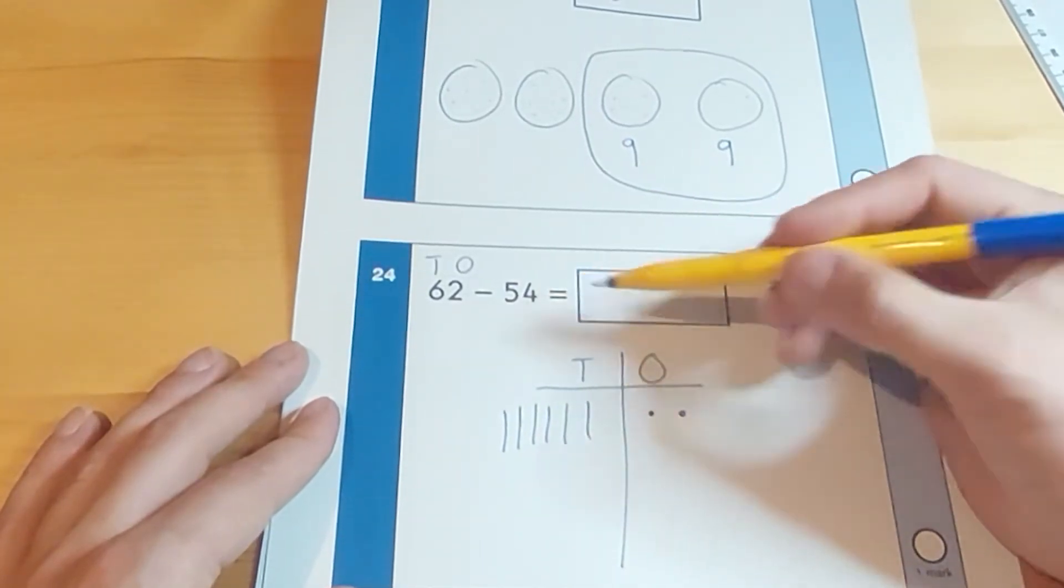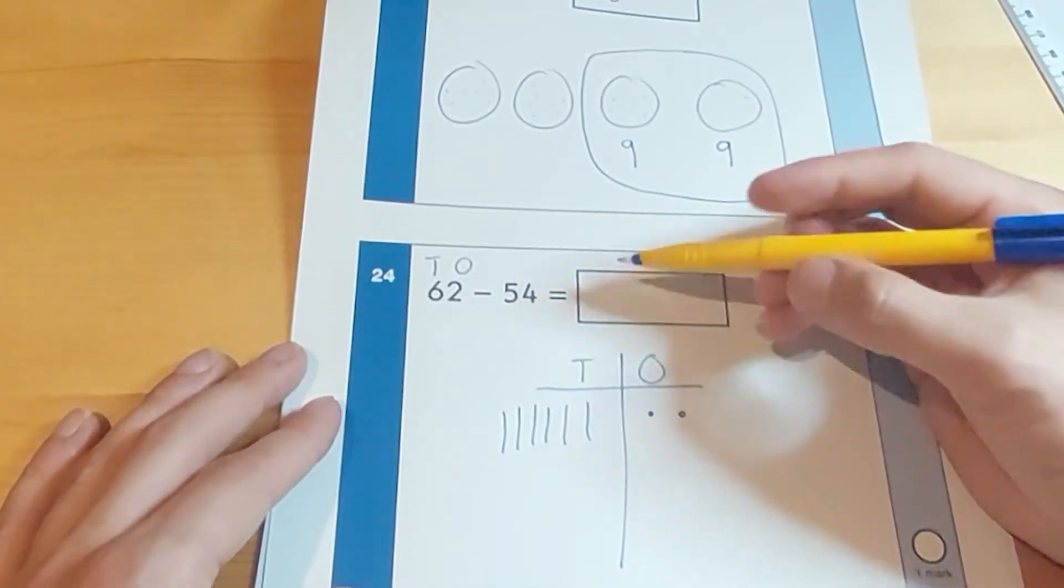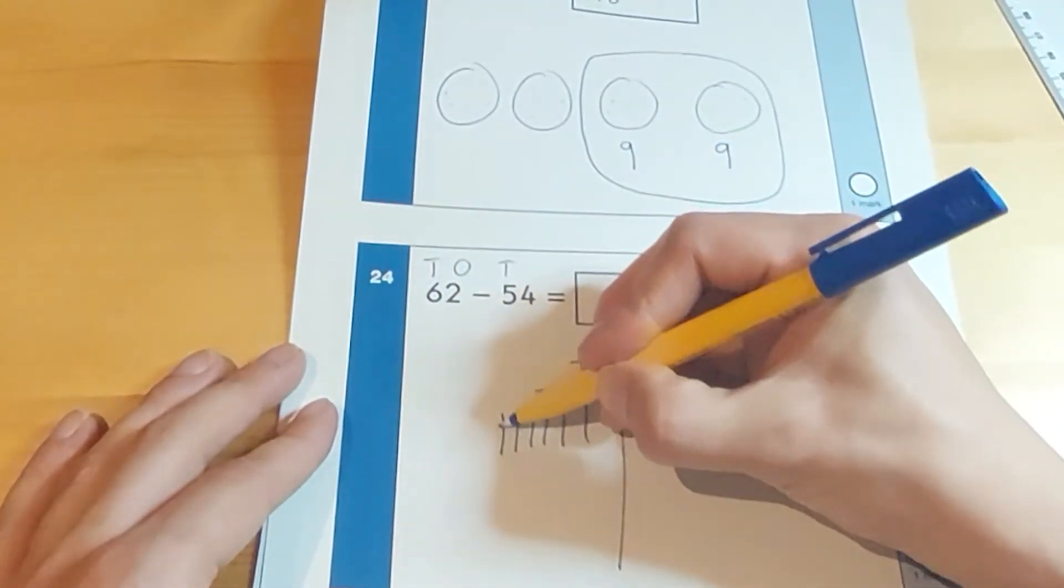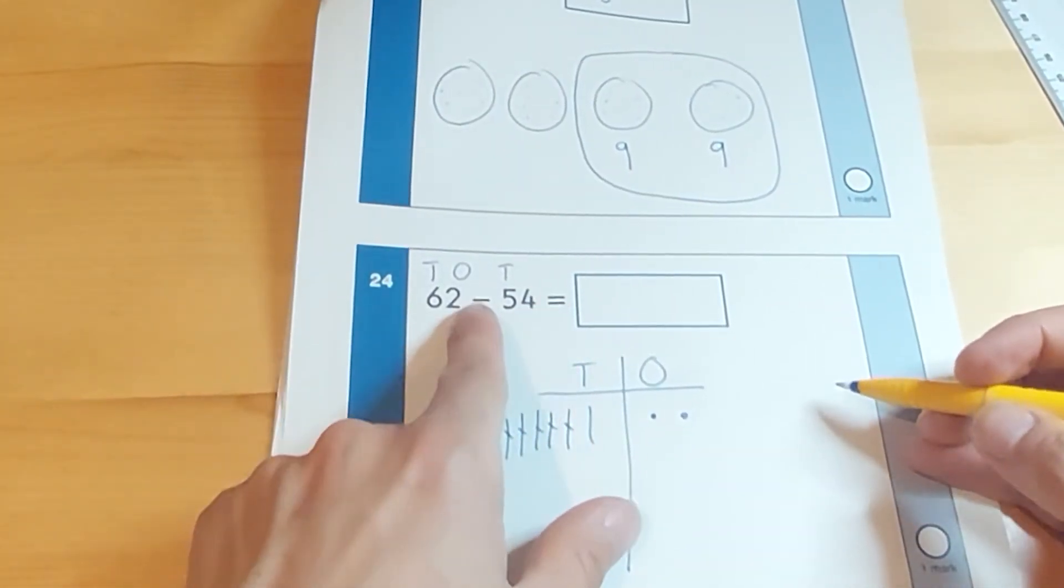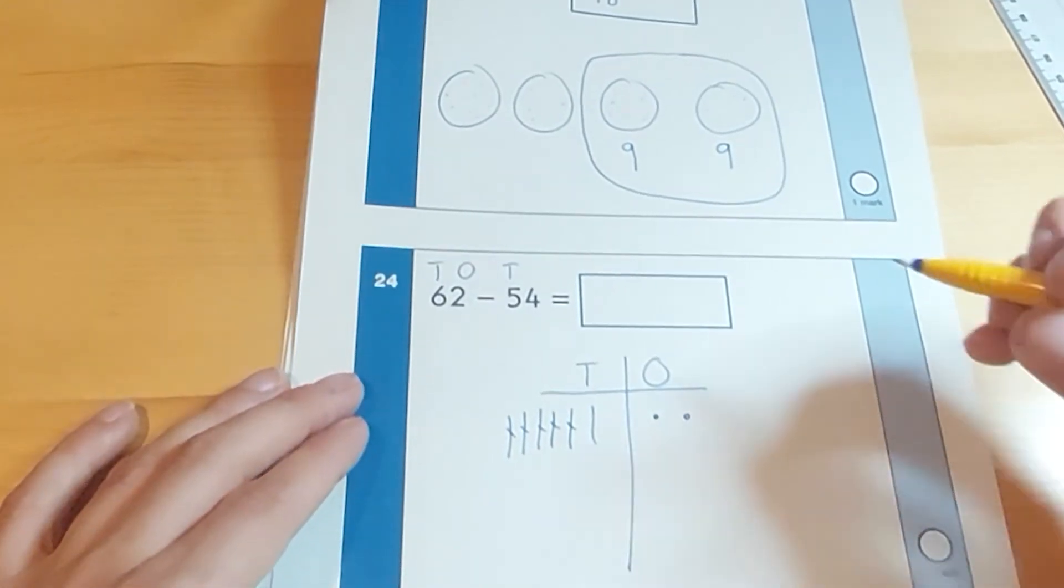And now we're going to take away 54. First of all, let's take away the tens. 10, 20, 30, 40, 50. But look, we can't take away 4 ones from 2 ones. So we're going to show them how to borrow.